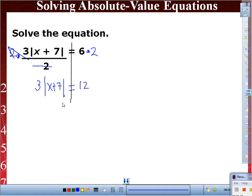We're left with three times the absolute value x plus seven equals twelve. What is the three doing? It's multiplying. What is the inverse? Divide by three, divide by three. We end up with the absolute value x plus seven equals four. Do we have anything else outside the absolute value? No.